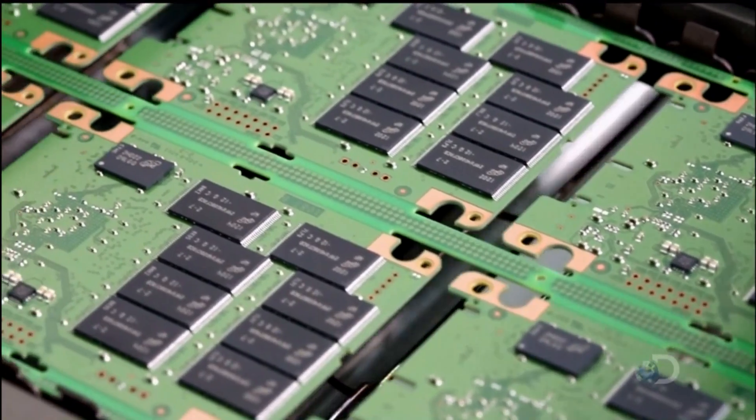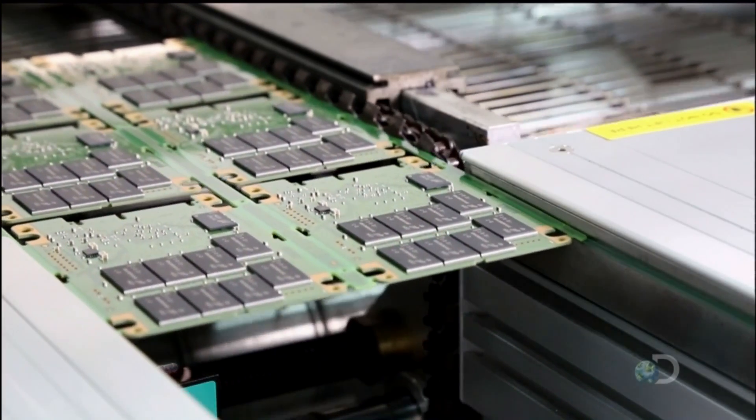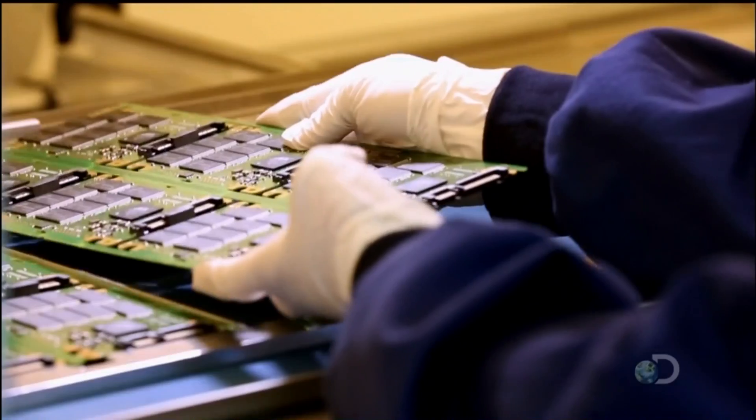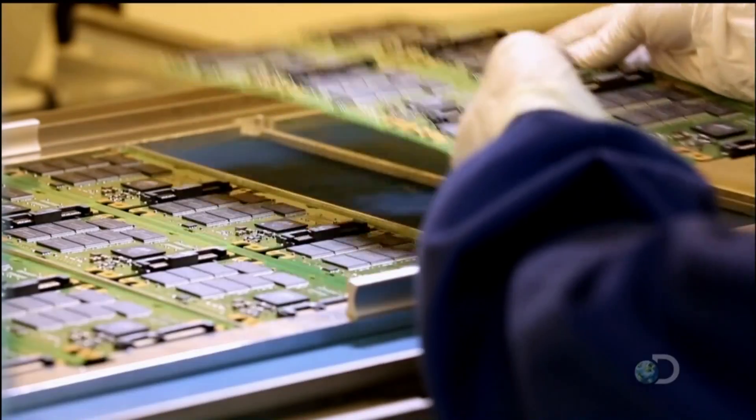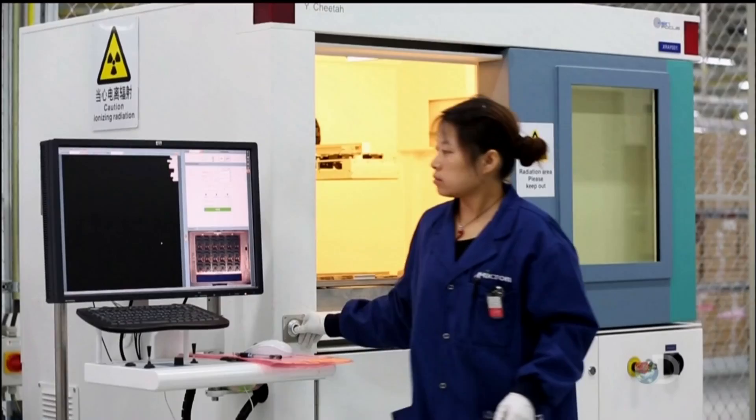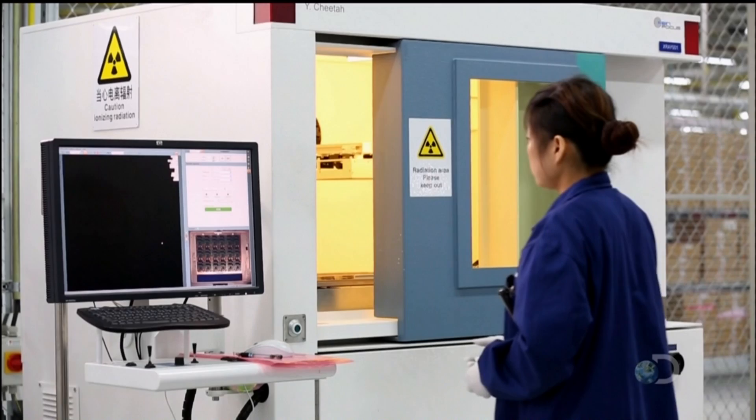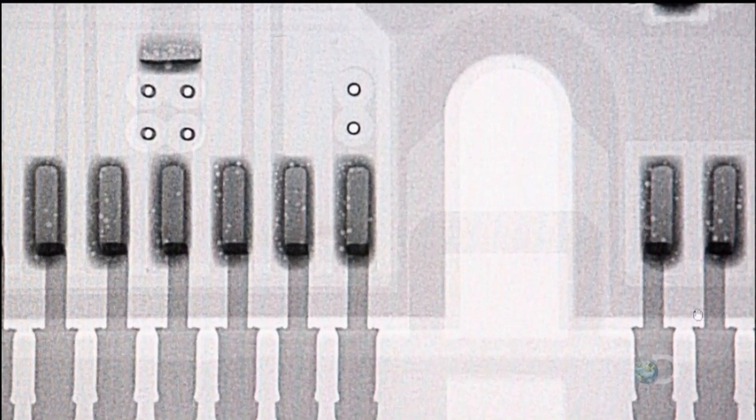The brain of the solid-state drive is now complete and ready for the first phase of quality control testing. This machine performs an optical scan to verify that every component on the board is set in the right place. The next machine X-rays the board to verify that each component is securely soldered in the correct location. A later phase of quality control testing will verify the drive's performance.